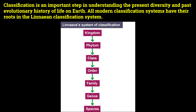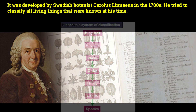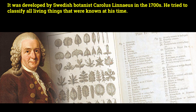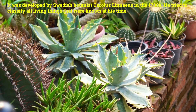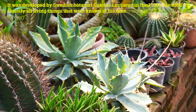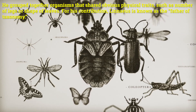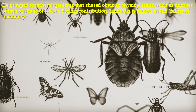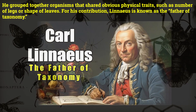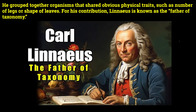All modern classification systems have their roots in the Linnaean classification system. He was a Swedish botanist, Carolus Linnaeus, in the 1700s. He tried to classify all living things that were known at his time. He grouped together organisms that shared obvious physical traits such as number of legs or shapes of leaves. For his contribution, Linnaeus is known as the father of taxonomy.